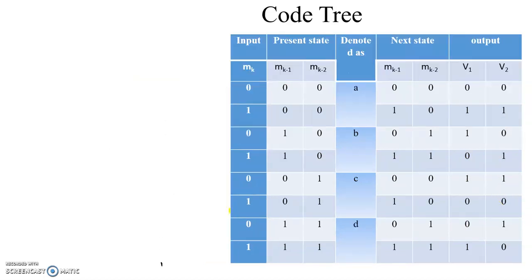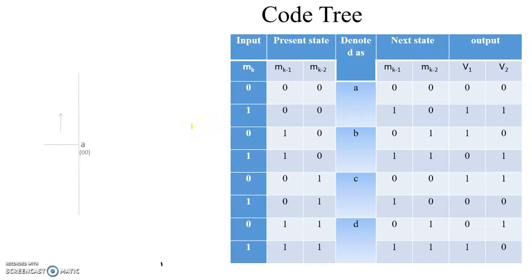We move on to the code tree. With the help of the state table, we are going to prepare the code tree. We are at the initial state A, that is the 0,0 state. There is one thumb rule: if we have the input 0, then we move in the upward direction, and if we have the input 1, then we move in the downward direction. With input 0, we move upward to the next state 0,0, which is state A, and the output 0,0 is written here.